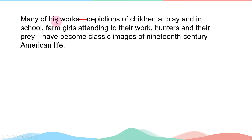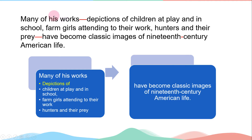第五句：Many of his works — depictions of children at play at any school, farm girls attending to the work, hunters and their prey — have become classic images of 19th century American life。這個句子裡，老師主要講的是 dash 的用法。Dash 是補充說明。講完他的許多作品後，要仔細說明作品是哪些，可以用逗號，也可以用 dash。作者這裡選擇用 dash，因為這邊已經有很多逗號，用 dash 比較好，而且 dash 可以更加強調。